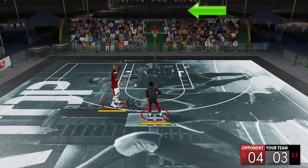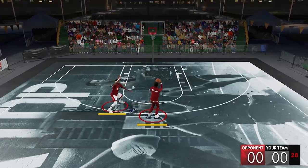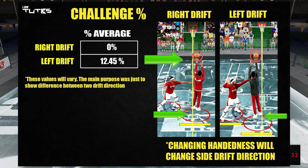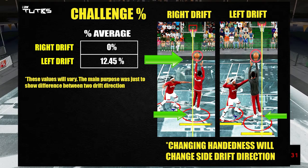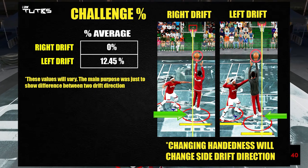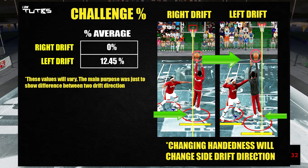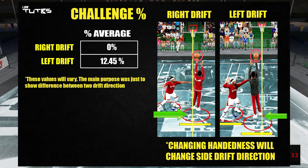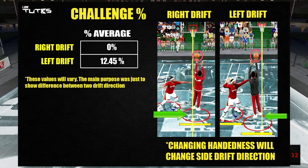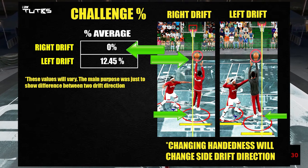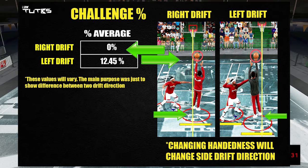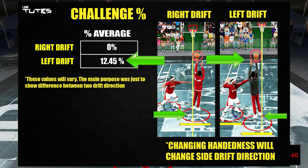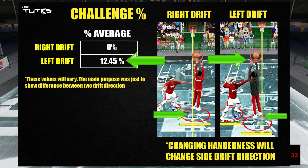What makes side drift really important is that it affects your challenge reduction a lot. Even this left-handed player exposing the ball to the defender on the left has less challenge than the other who has the ball on the opposite side of the defender. Side drift is actually more important than the actual ball exposure. Even when the ball was on the same side as the defender, there was an average of 0% challenge because the player was moving away, while on the other side there was about 12% challenge average just because they were drifting towards the defender.